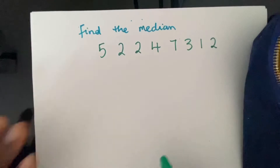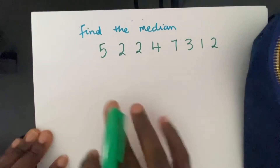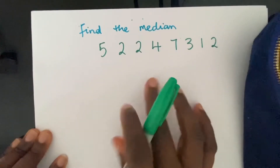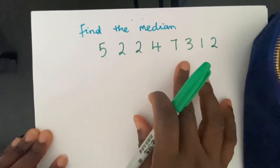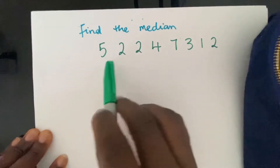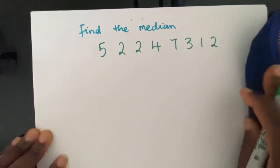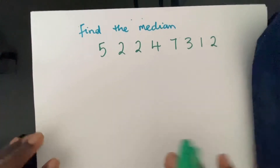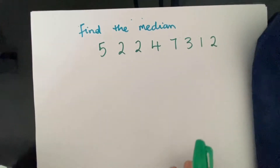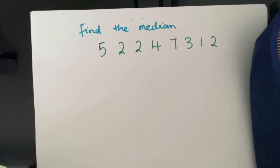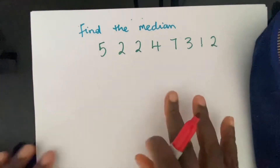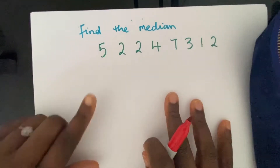Here's an example where I have an even data set. If I count these numbers, I'm going to have 8, and 8 is even. So we're going to end up with 2 numbers in the middle. Let's not forget that we have to start off by arranging them in ascending order.